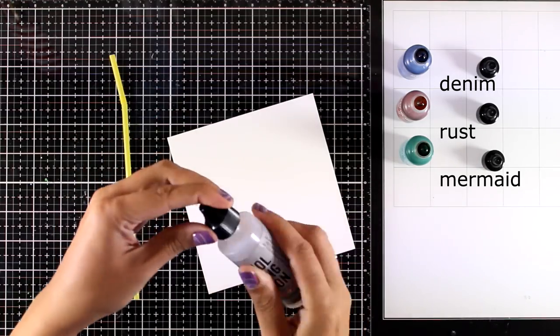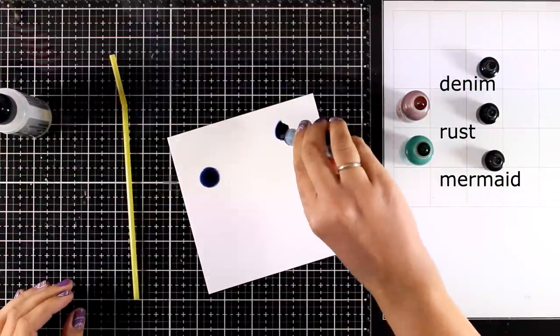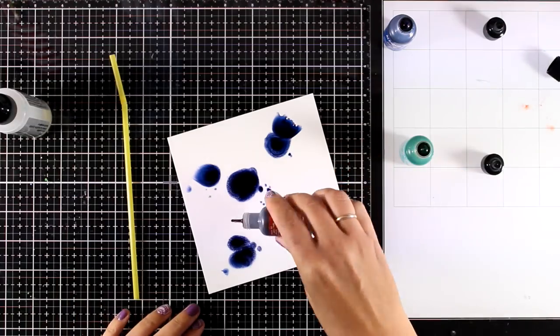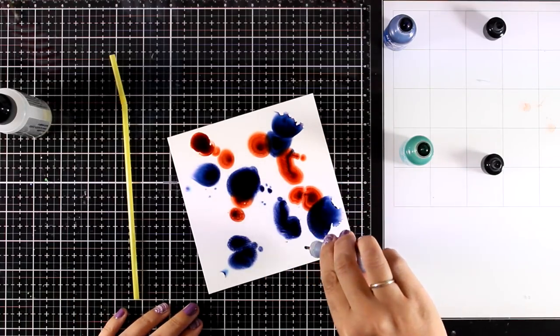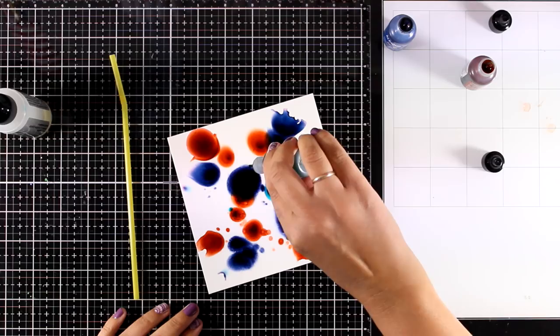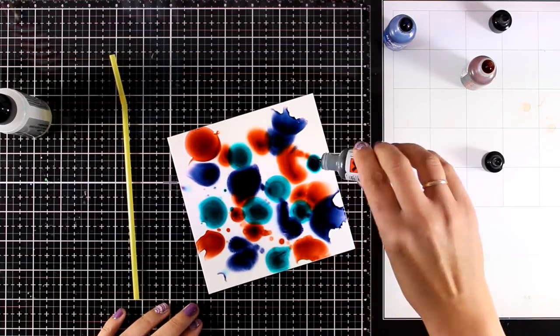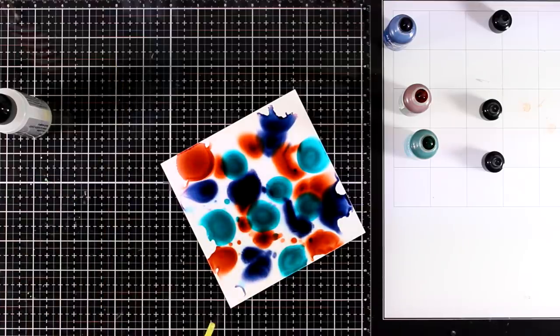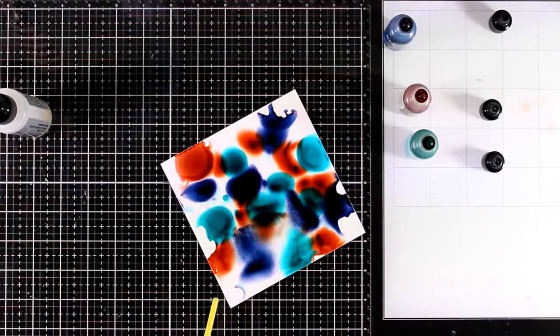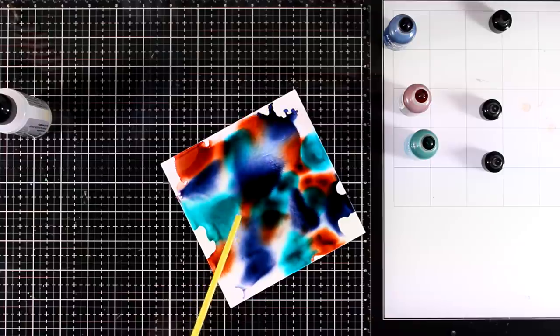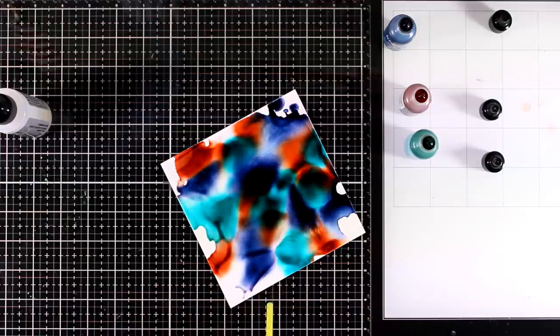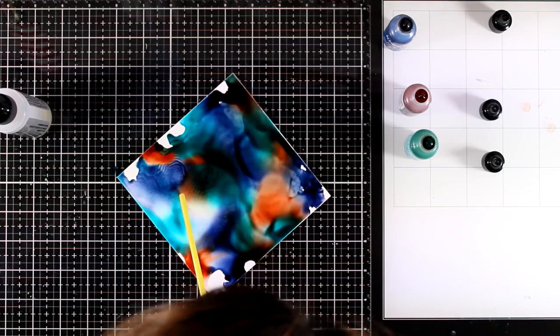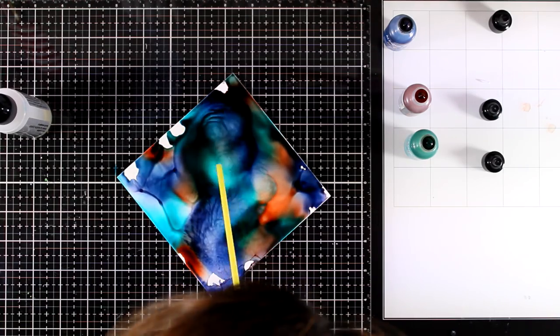I'm applying blending solution on my yupo paper and I was quite generous with that. Now I'm going to add my three colors. The blending solution is going to help the ink to move around when I will blow with my straw. So I have all the color there, now I will start blowing until I'm happy with the outcome. I want these colors to blend enough but at the same time I still want to see some variation of the color and I don't want to end up with a flat color on my page.